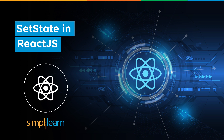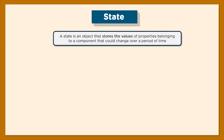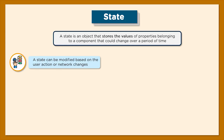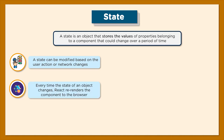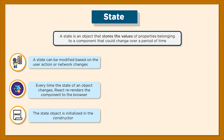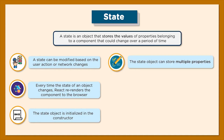So without further ado, let's begin. Typically, a state is an object that stores the values of properties belonging to a component. These values can change over a period of time, either via user interactions or network changes, and the state helps facilitate this functionality. Every time the state changes, React re-renders the component to the browser. The state is initialized in the constructor, and a state can also store multiple properties.